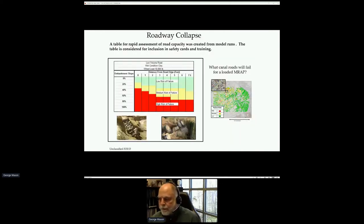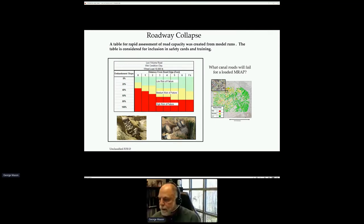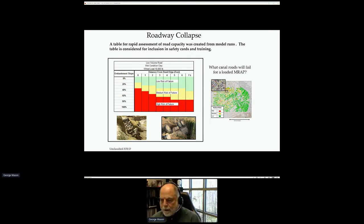Another study looked at the collapse of low-volume roads, as we were running very heavy armored vehicles weighing up to 60,000–100,000 pounds over them. Road collapse was causing fatalities. Using a slope-and-embankments approach in a GIS system with high-resolution LiDAR, we could assess road failure. We performed computations based on the level of water on the sides of the road using the slice method from civil engineering to determine where roads would become unstable and collapse.